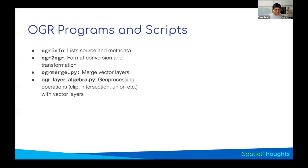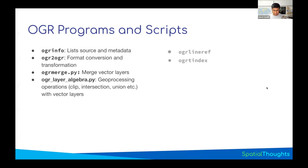OGR Layer Algebra lets you do geoprocessing — if you have two layers and want to intersect them or do spatial joins between them. This is like GDAL Calc but for vector. There are also other tools for building spatial indexes, getting the bounding box of all your files, and doing linear referencing for transport data.